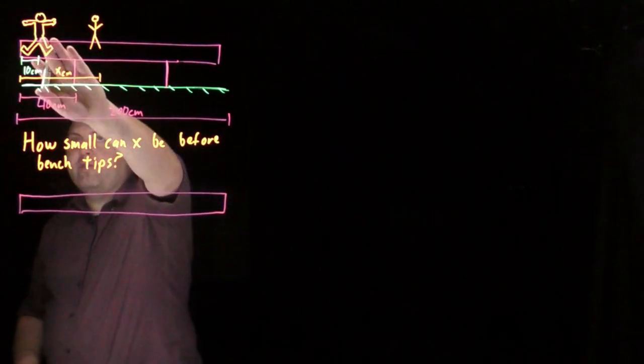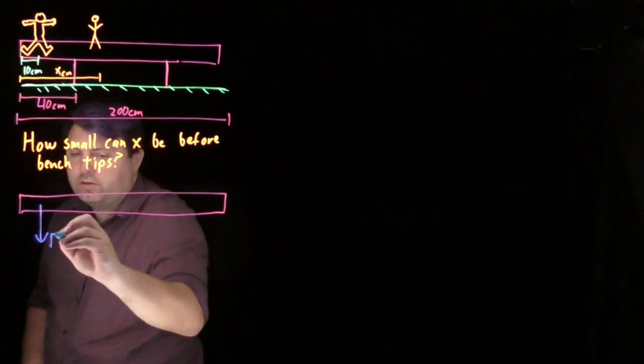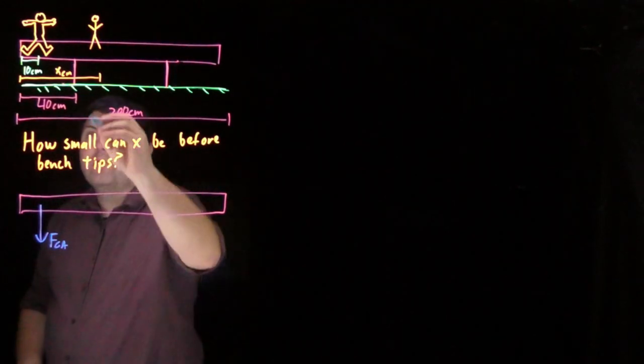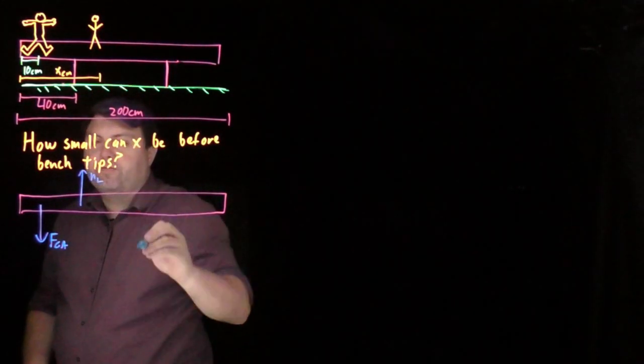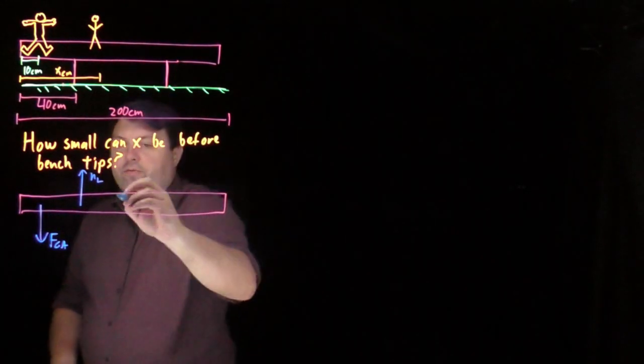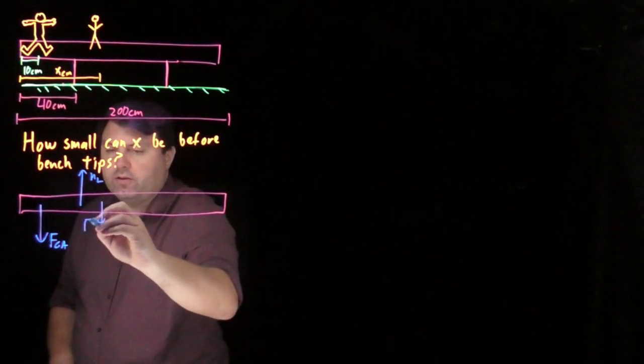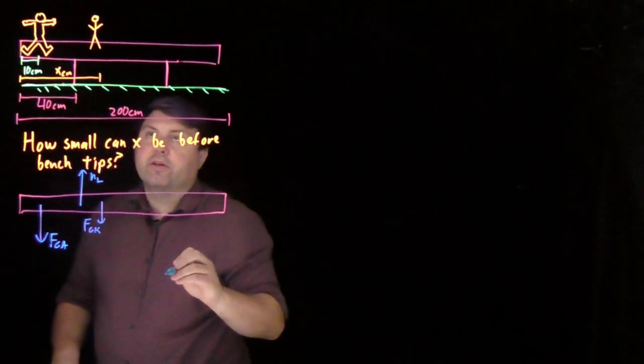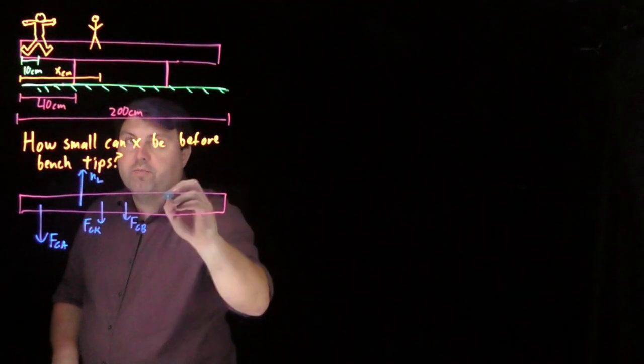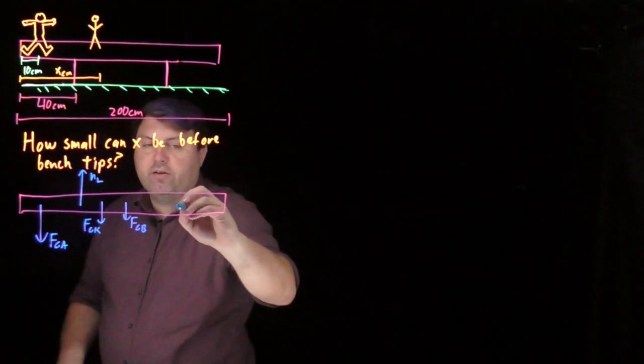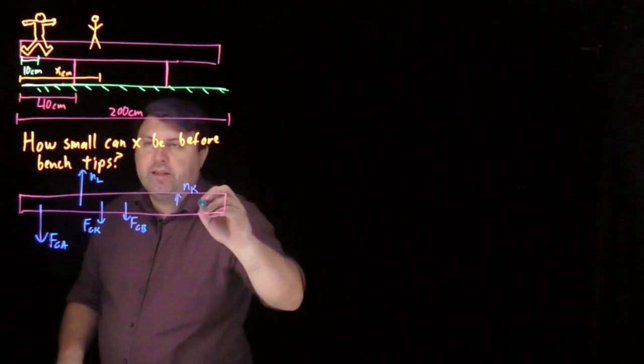So we have the force from our adult. We have the force from this normal force from our left side. We have the force from this child or the kid. And then exactly halfway down, we have the force of gravity from the bench. And then over here, we might have some sort of force from the right leg.